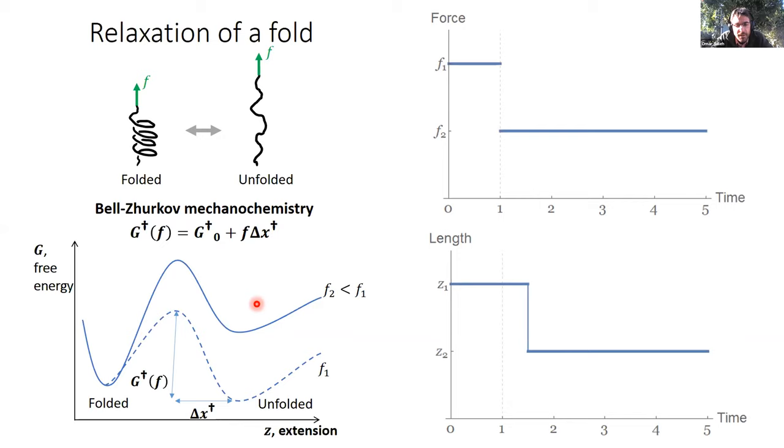So that means as you go to lower force, suddenly the folded state will be more stable and the system will jump over this barrier. So in pretend data shown on the right, here's the force profile, you get a force quench at time arbitrary units of one. After some waiting time corresponding to the stochastic waiting time needed to cross this barrier, there's a cooperative folding transition of this little unit.